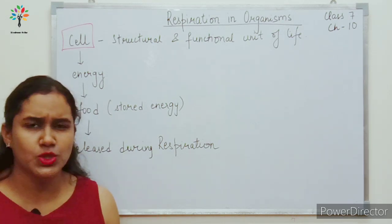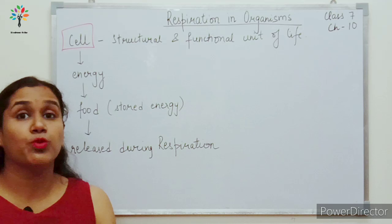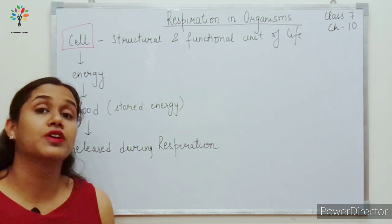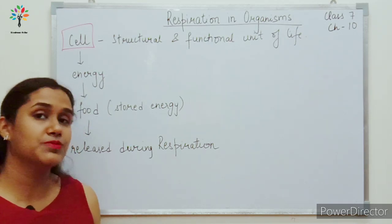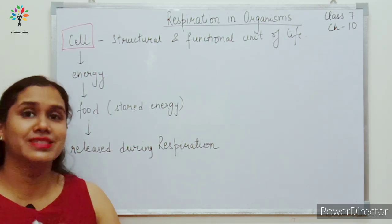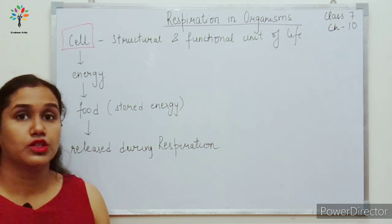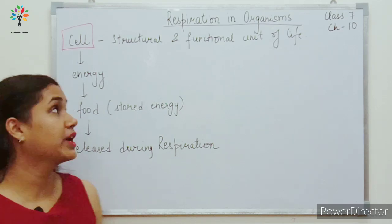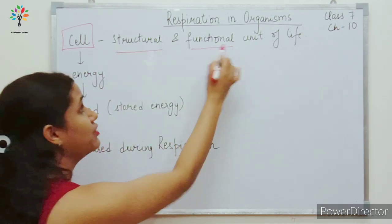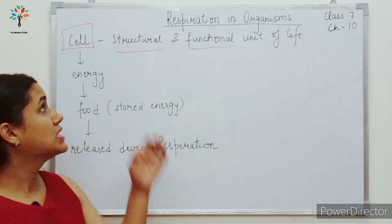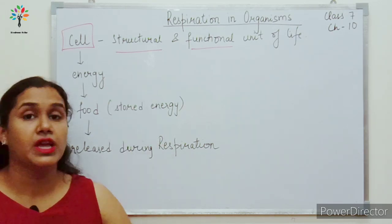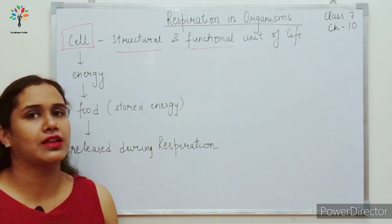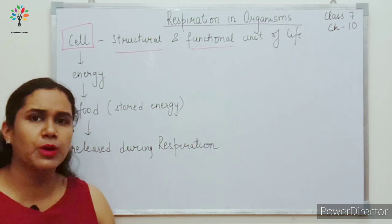There are two important points. First, all living organisms are made up of cells — some unicellular, some multicellular. Cells are the microscopic units and the main property of a cell is that it is the structural and functional unit of life. Structural unit means every living organism is made up of cells.